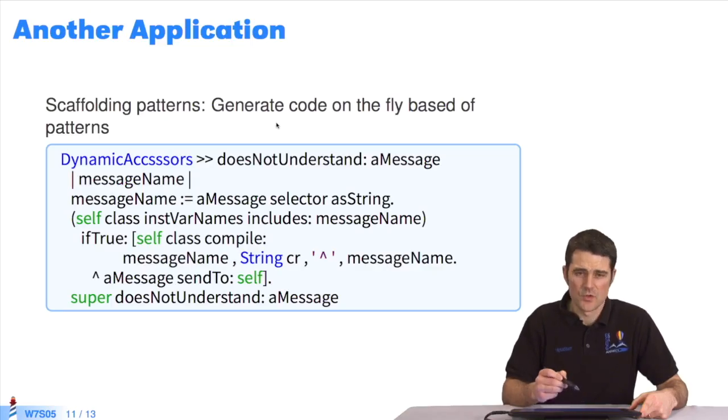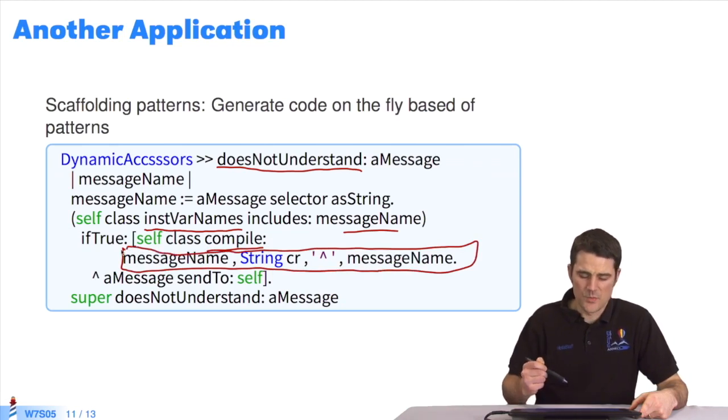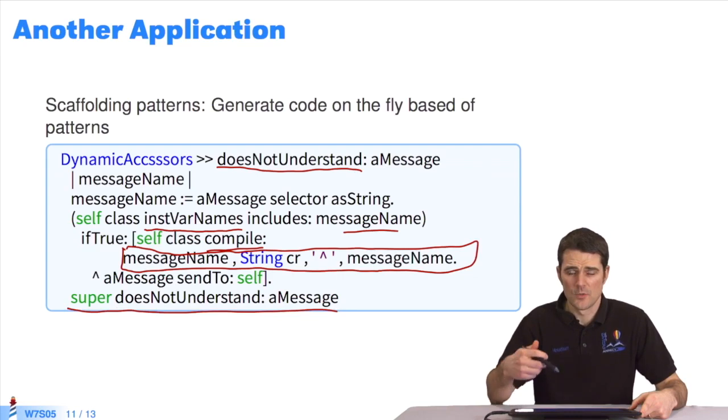Another example of how to apply this technique is to dynamically generate accessors, or even methods. Here, I've redefined the doesNotUnderstand method. I see a message has been received. So I test if I have the instance variables that include the message. If so, I generate a new method using compile to define a new method for the class. This will return the value of the variable. Here, I'm generating the variable's read accessor. If the message sent does not match the name of an instance variable, I send a super doesNotUnderstand. This enables us to load read accessors automatically, depending on if they've been called or not.